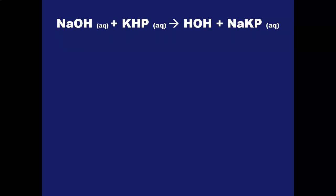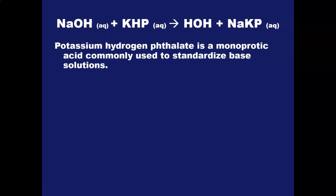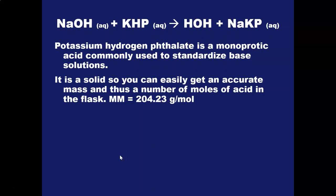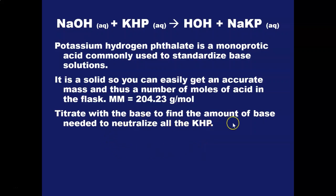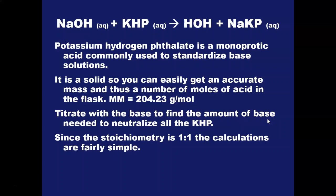Since we know approximately what the molarity will be, we're going to use this acid — sodium hydrogen phthalate, also called KHP — which is a monoprotic acid very commonly used to standardize base solutions. It's a solid, so it's easy to measure accurately down to milligrams, and it's fairly air-stable, so the mass doesn't change rapidly. This lets you get an accurate mass and an accurate number of moles of acid in the flask. Once you have the moles of acid, you titrate with the base to find the volume needed, and since it's a one-to-one reaction, the calculations are fairly simple.